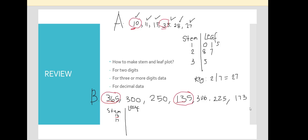Continuing the stems: 17, skipping 18 and 19, then 20 — none, 21 — none, 22 — we have data, then 23 and 24 — none, 25 — we have data, skipping 26 and 27, then moving to 28, 29, and 30.